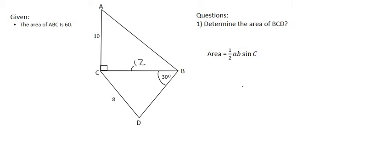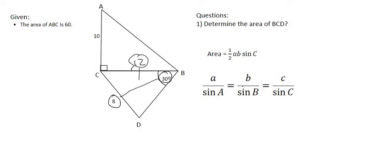The sine rule is all about opposites. We've got the 30 degree being opposite to the 8, and then the 12 is opposite to the D. We'll just call that equal to X. And so there we have opposites, and we only have one unknown, which is X.